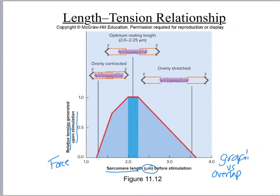Looking right here first, this is the region of optimum resting length. In this picture, you've got your thick filament, your thin filament on either side, and your z-disc. You can see there is a certain amount of overlap between the thick filament and the thin filament.